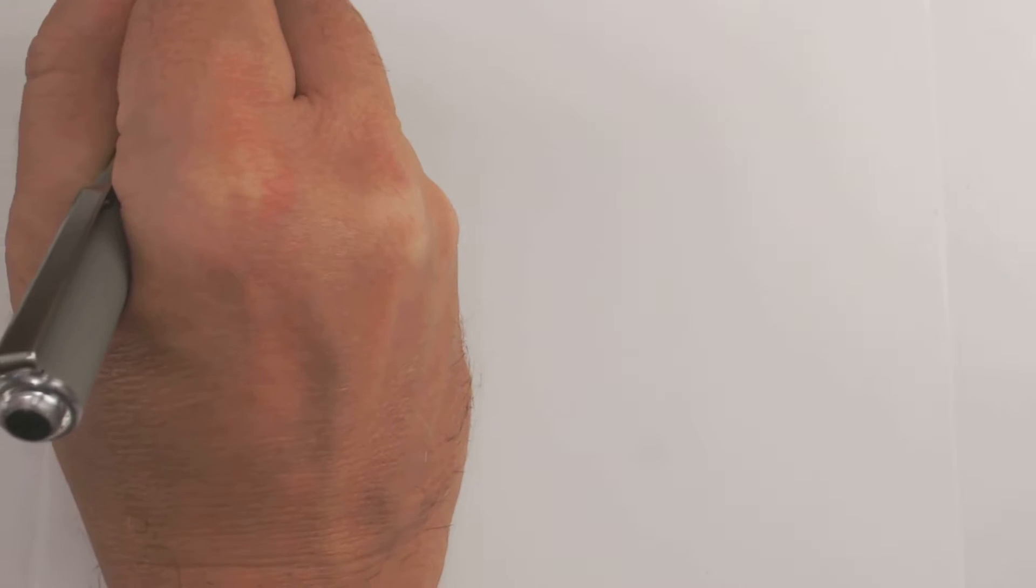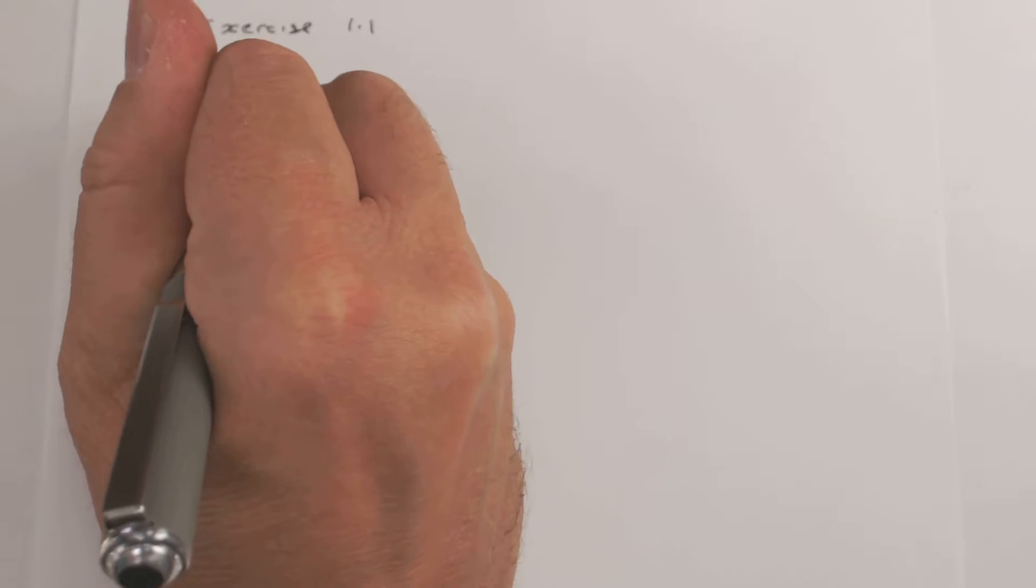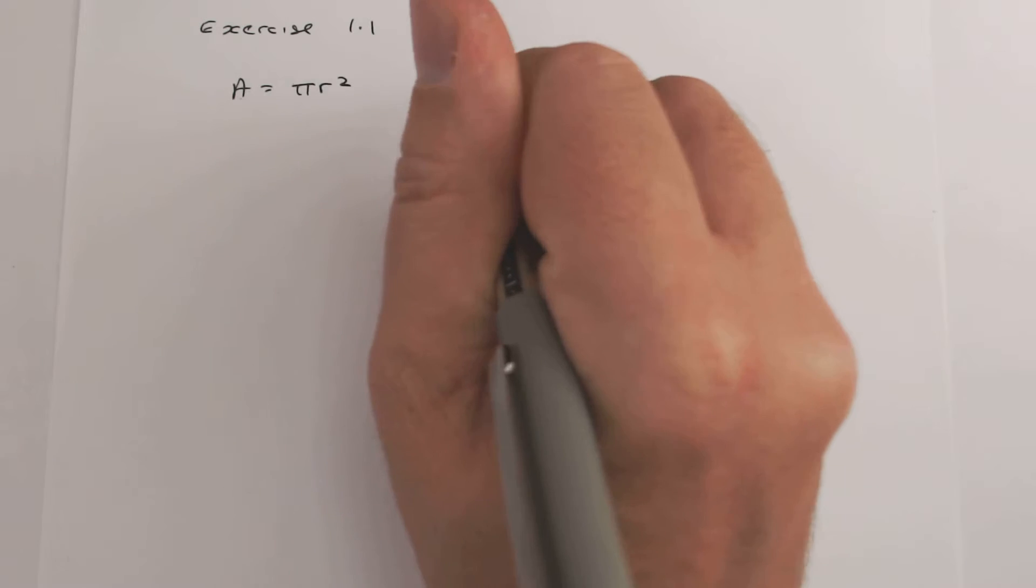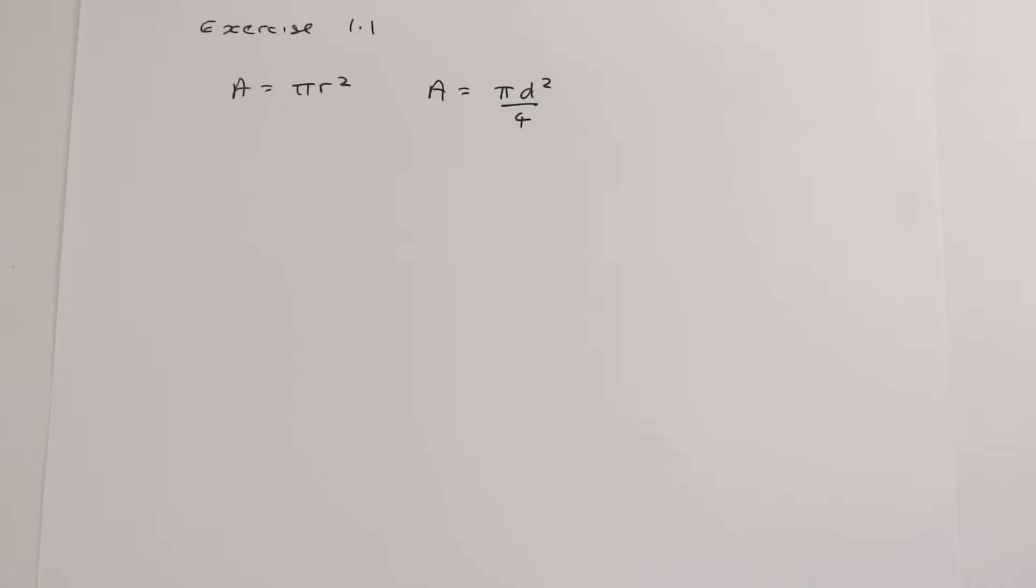Okay, let's make a start. Exercise 1.1. The important thing to remember is that engineers don't use πr². Engineers like to use πd²/4 to find the area. It saves us all the hassle of having to convert values. Pipes and whatnot are always going to be in terms of diameter.